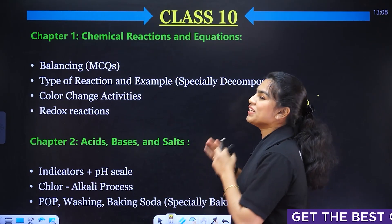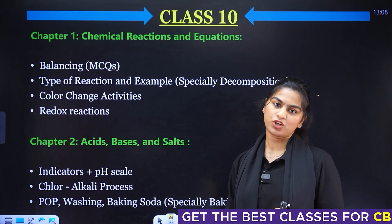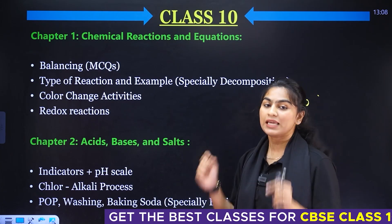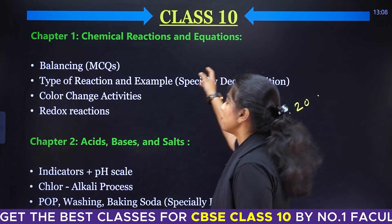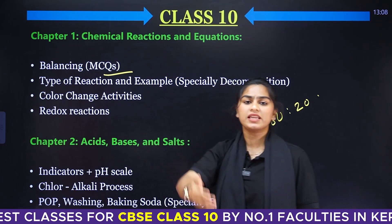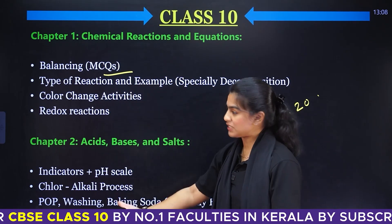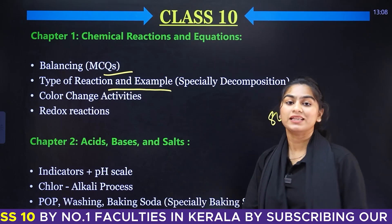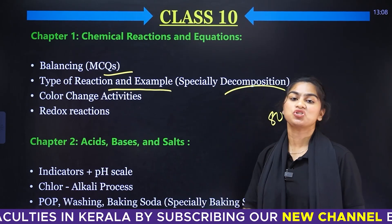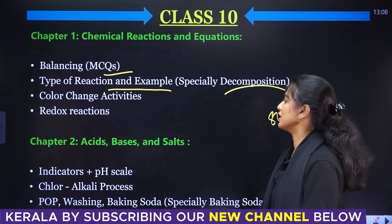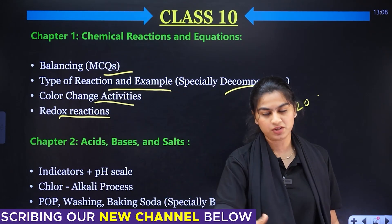Now in the first chapter, Chemical Reactions and Equations, the important topics are Balancing Reactions and MCQ questions — these will be repeated. Types of Reactions and their examples are important, and there are more questions about Decomposition Reactions. Color Changing Activities and Redox Reactions are also important.